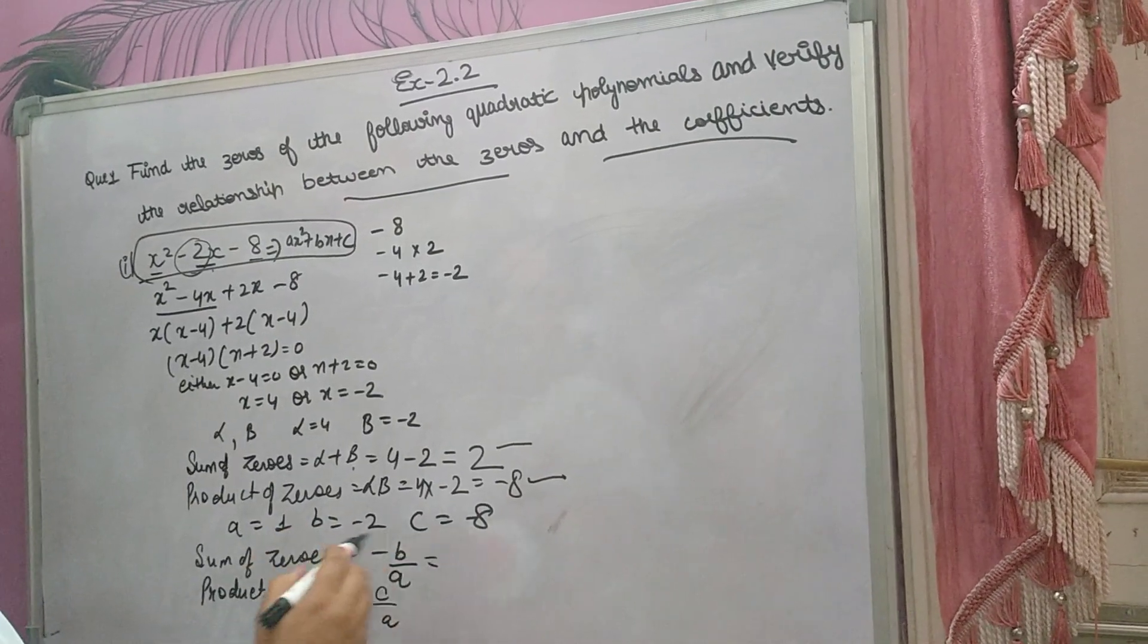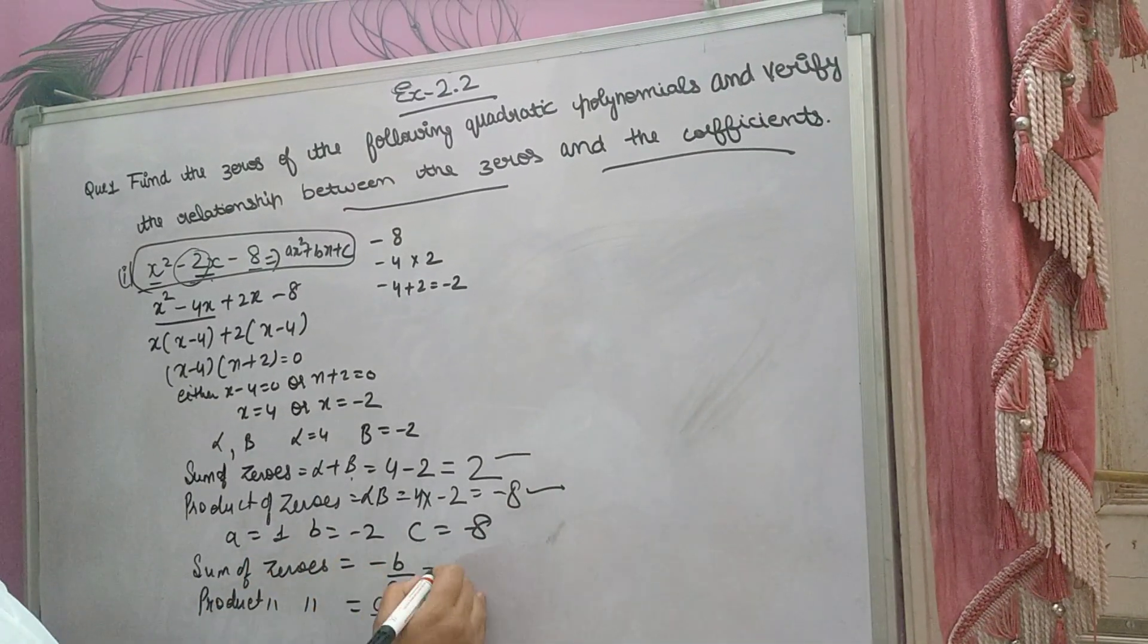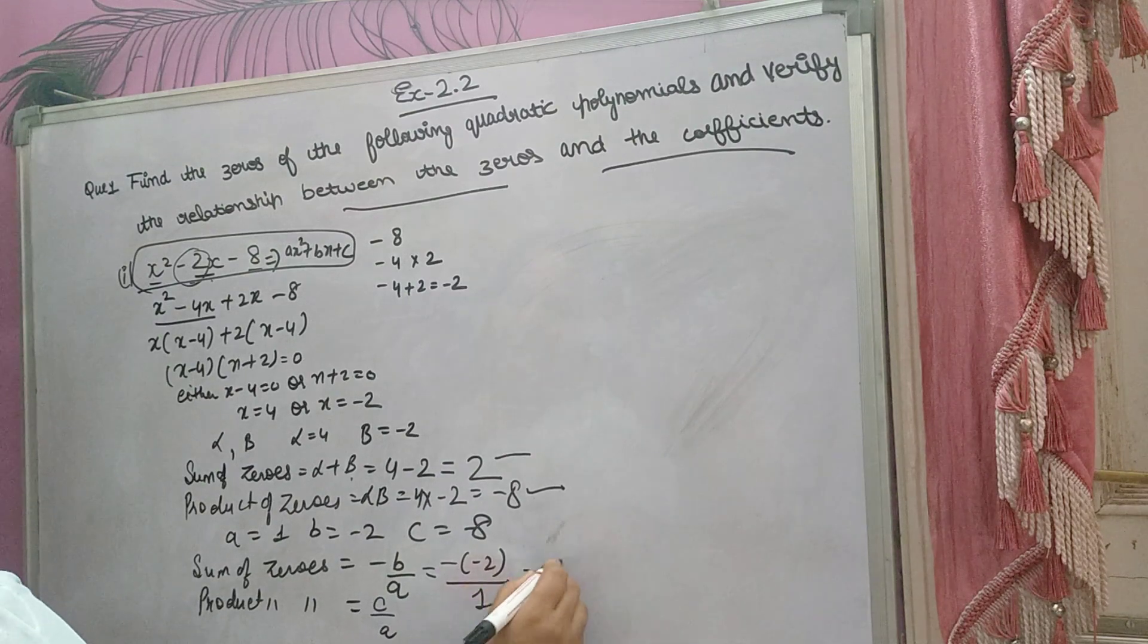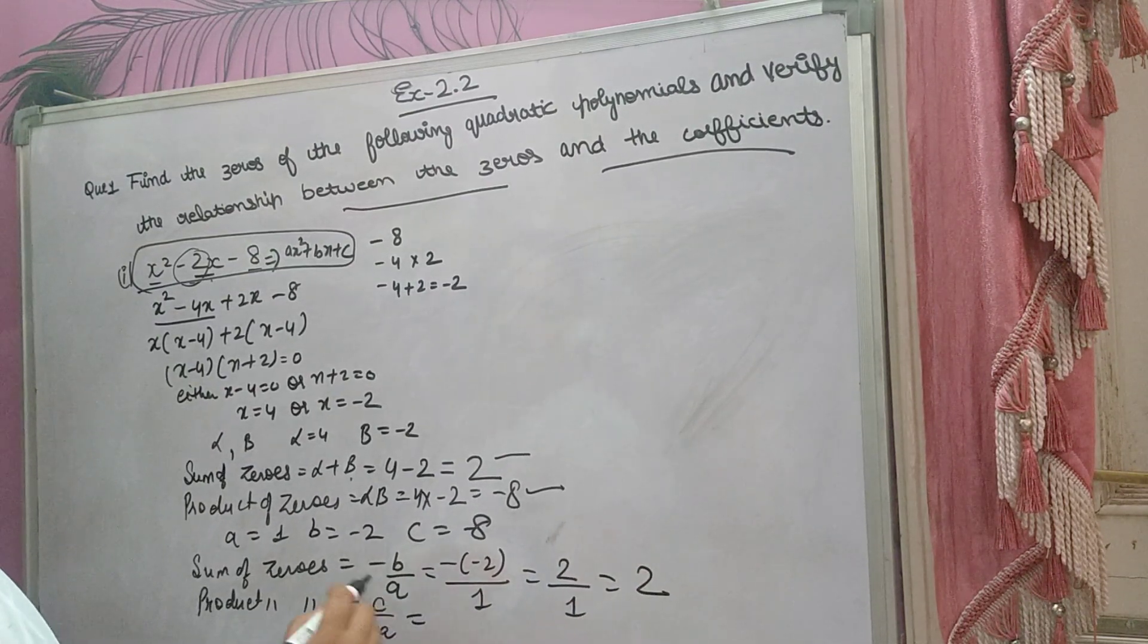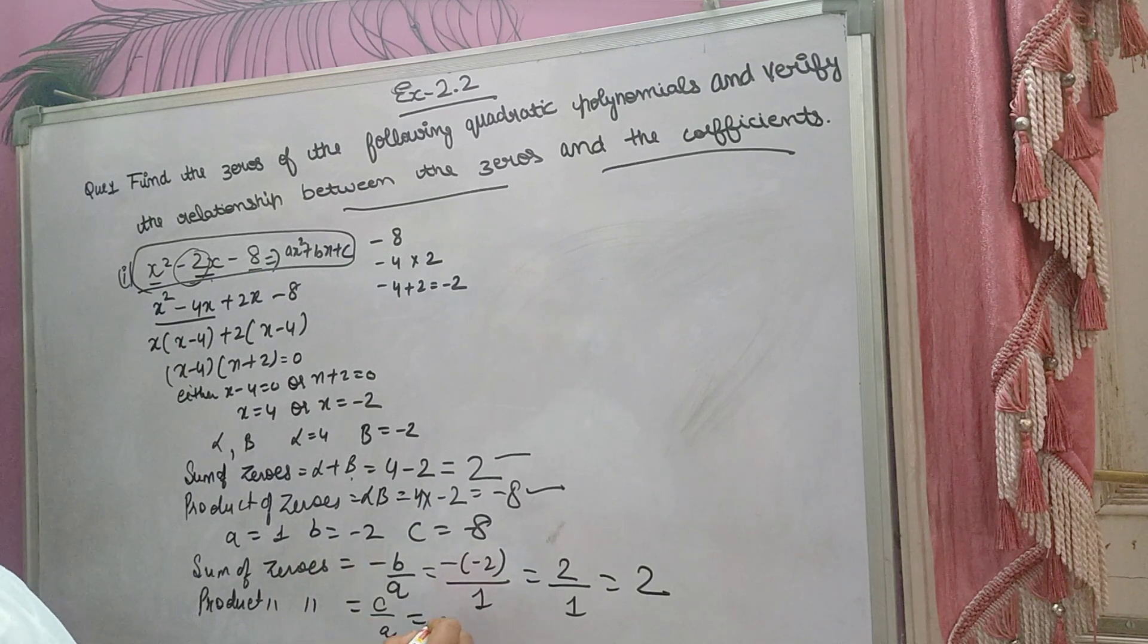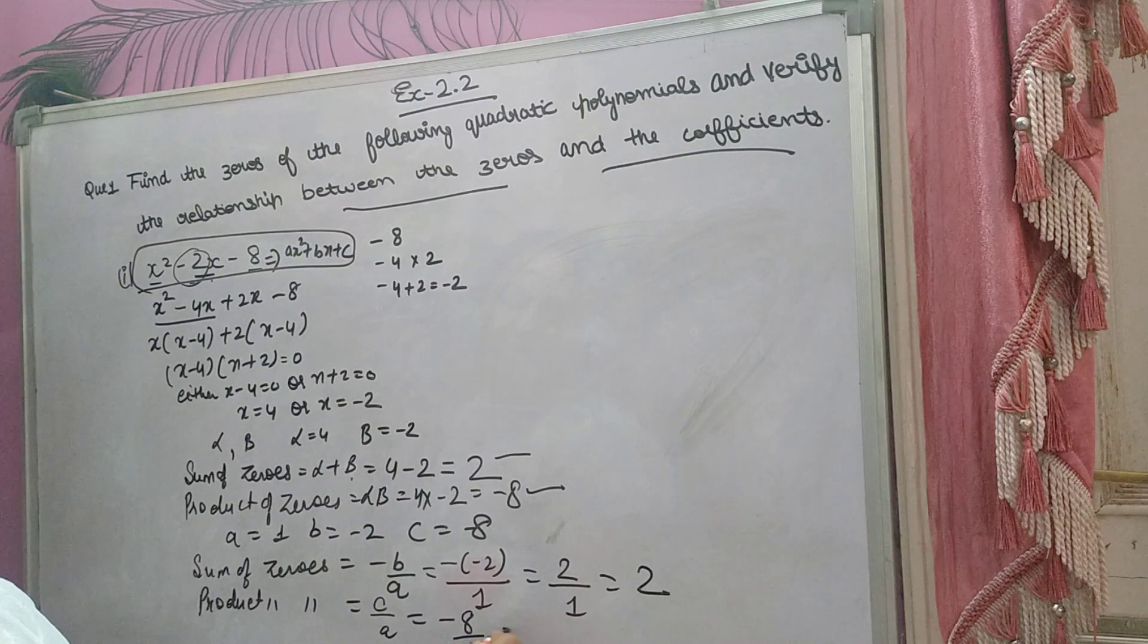Now according to this question, b is minus 2. So minus of minus 2, and a is 1, that means 2 over 1, that is 2. And product is c over a. c is minus 8, minus 8. a is 1, so it came minus 8.